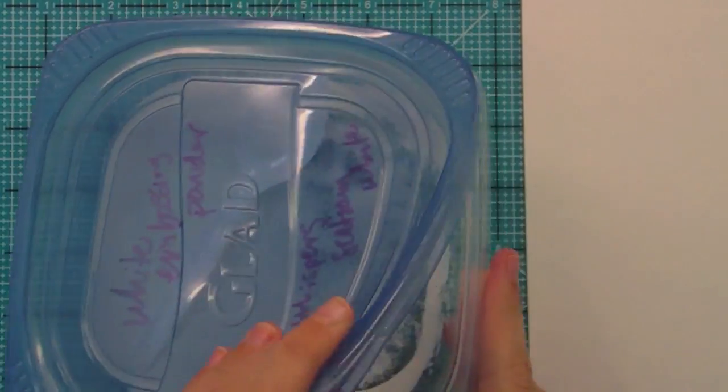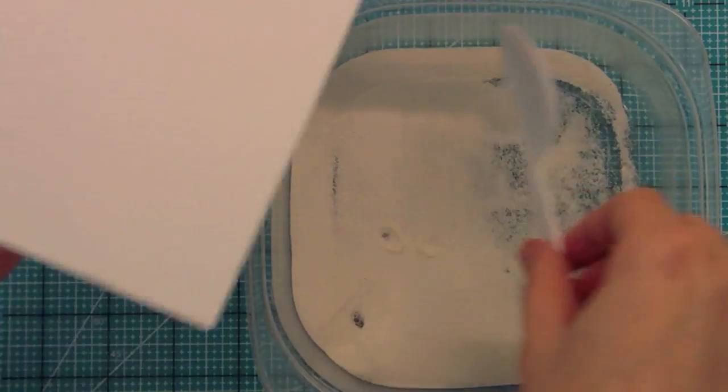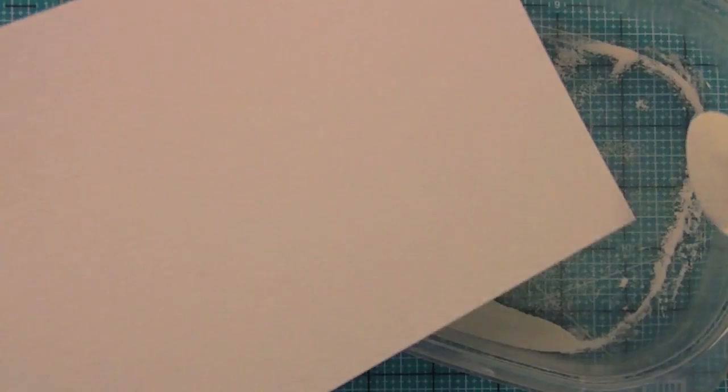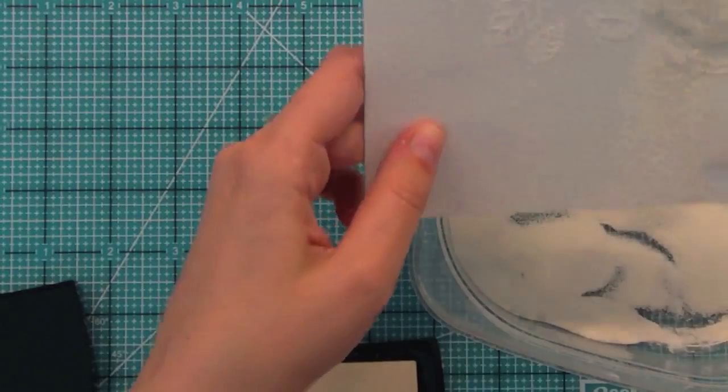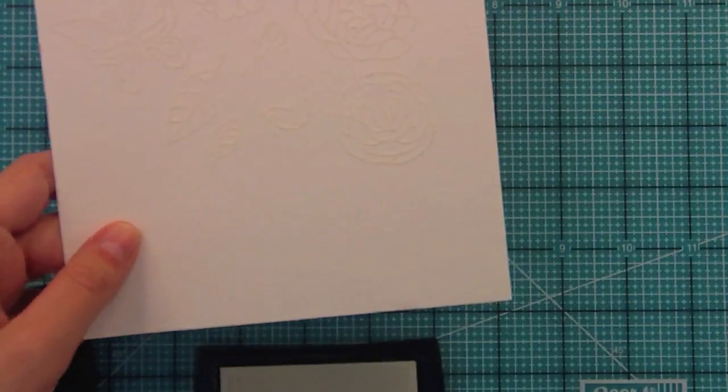I'm going to go ahead and heat them up with some white heat embossing powder. I like keeping my heat embossing powder in these little tubs because if I use the little jars sometimes make a huge mess. I think it's really easy to just take that spoon and then just dump it into one of these little Tupperware things and so that works really well for me.